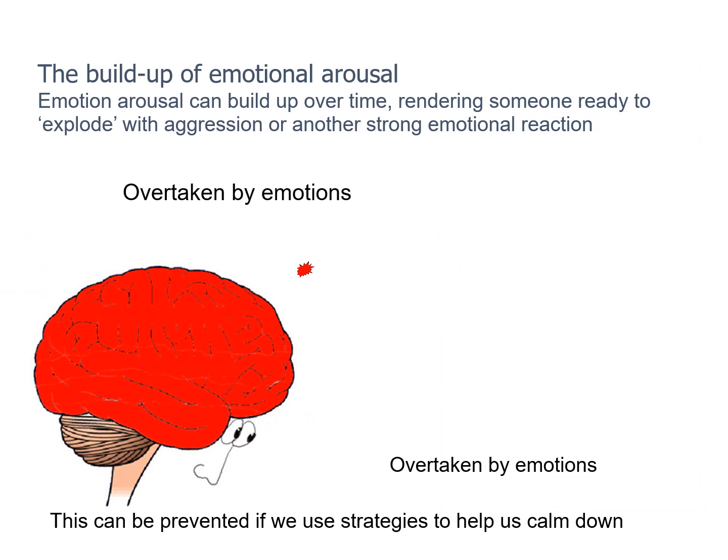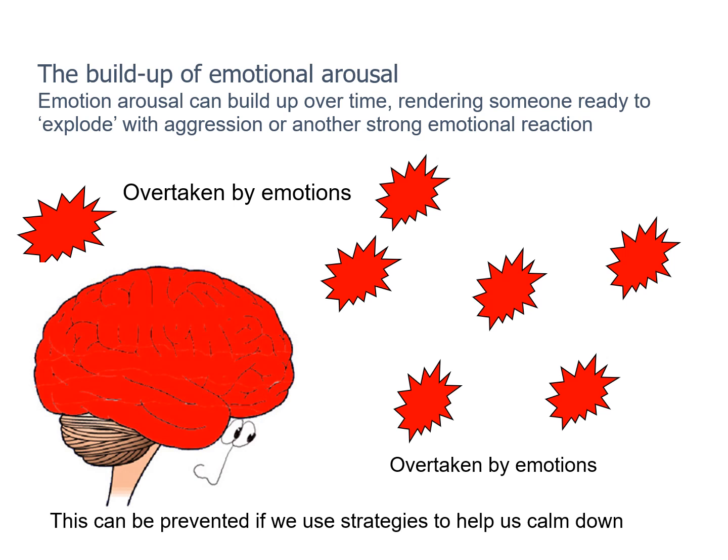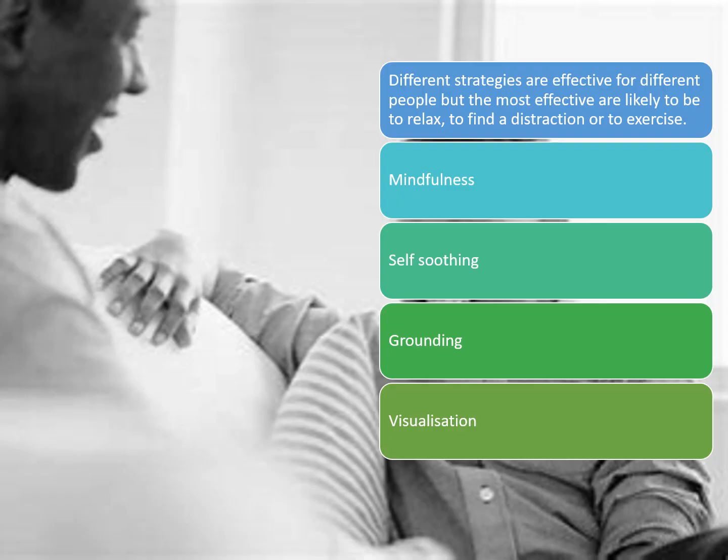It's important for children to understand how the build-up of emotional arousal actually happens over time — it can render us completely ready to explode with aggression or another strong emotional reaction. We can teach children to prevent this by using strategies to calm down and self-soothe. Mindfulness works for many of us, along with grounding, visualisation and deep breathing — please refer to my second session in this series on anxiety for more detail. It's also important to understand the notion of emotional memory: when something elicits an emotion, we have not only a memory of the event but of the strong emotions it generated, and these can be very long-lasting.